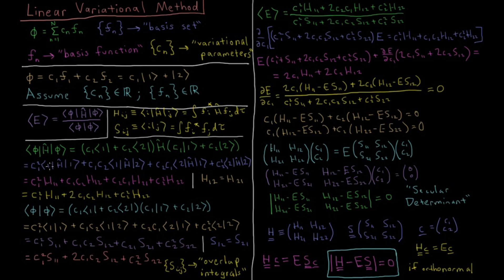We can use a shorthand for these integrals: the integral of basis function i-star times H times j over all space is called H_ij. This gives us a cleaner expression. We also have the simplification that H_12 equals H_21, because the Hamiltonian and all quantum mechanical operators are Hermitian operators. Going back to the definition of a Hermitian operator, this equality between the two integrals is precisely what it means to be Hermitian.